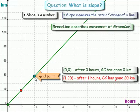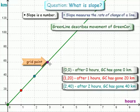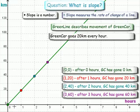Here's another grid point. It says after two hours, green car has gone 40 kilometers. One more point, this point is three sixty. So after three hours, green car has gone 60 kilometers.